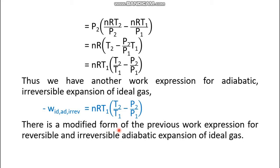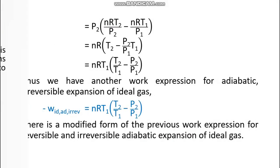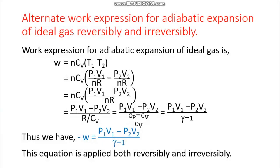Now there is a modified form of the previous work expression — the one equal to n·Cv·(T1 minus T2) — and we are going to modify that expression. This modified expression may be applied in case of both reversible and irreversible adiabatic expansion, unlike the alternate expression which is only applicable for irreversible adiabatic expansion. Starting from minus w equals n·Cv·(T1 minus T2), in place of T1 we write p1·v1/nR and in place of T2 we write p2·v2/nR.